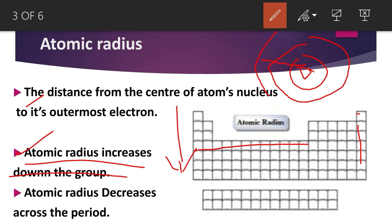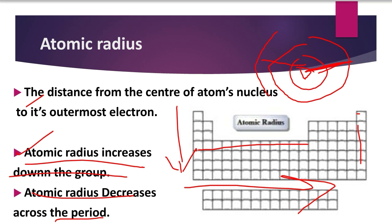As far as the period is concerned, atomic radius decreases across the period — when we move from left to right. Why does it decrease? The number of shells remains constant, but we are increasing the number of protons and electrons. With the same distance but increasing opposite charges, they attract each other more strongly, and this attraction causes a decrease in atomic radius.